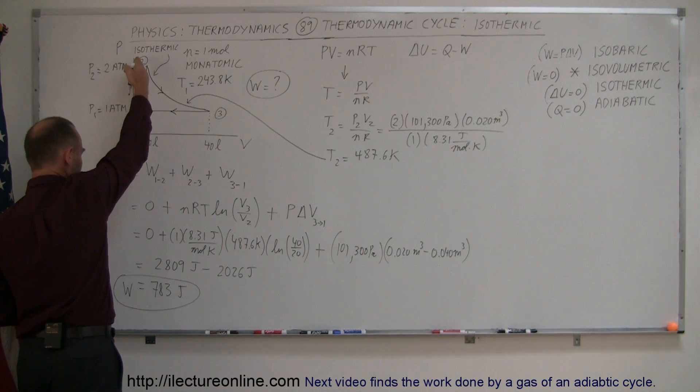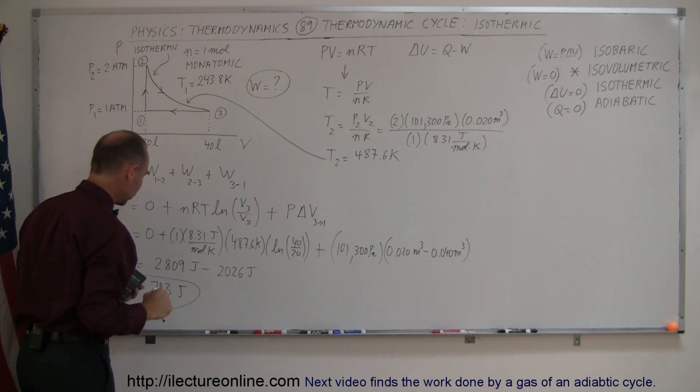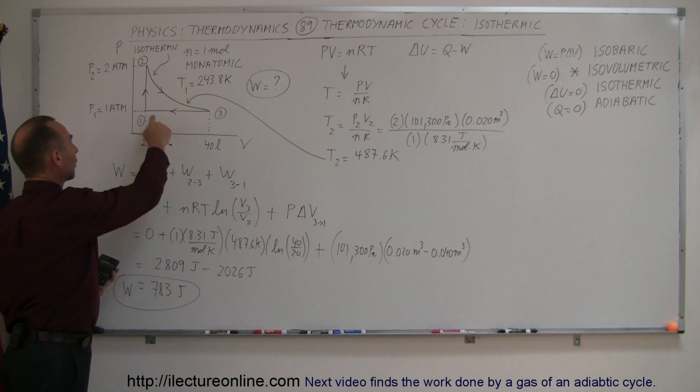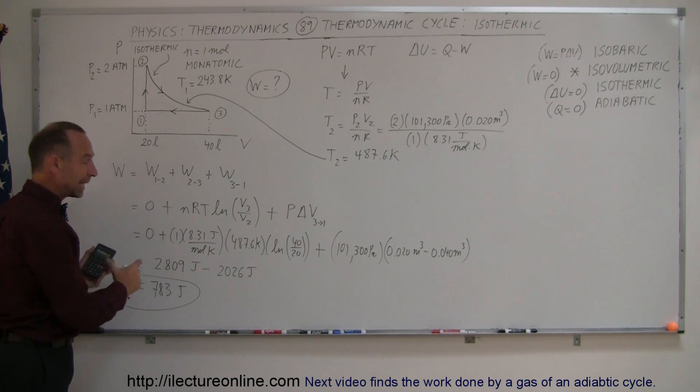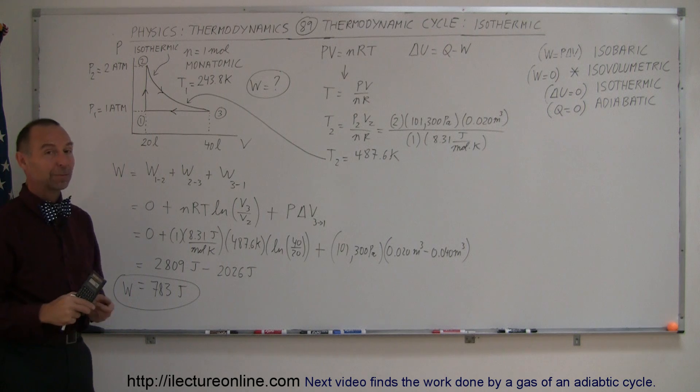Zero work done here, 2,809 joules of work done there, and then we'll come back over here, 2,026 joules coming back to the original state. Add them all up, you get a net amount of work done of 783 joules, and that's how we do a problem like that.